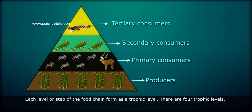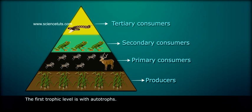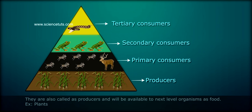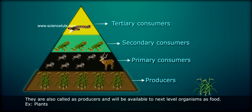There are four trophic levels. The first trophic level is autotrophs. They are also called producers and will be available to next level organisms as food, e.g. plants.